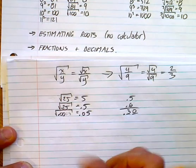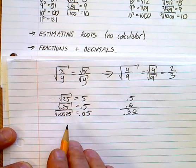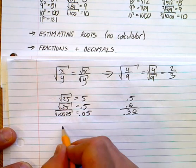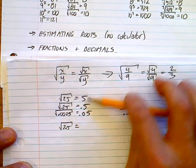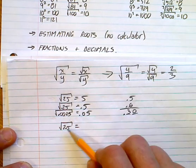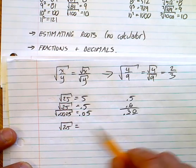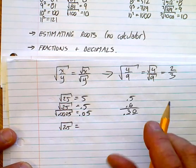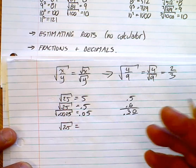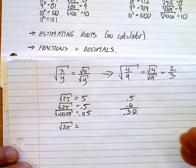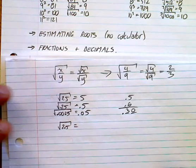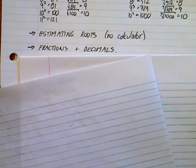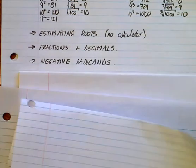The trick here is that 0.5 squared gives 0.25. If you want 0.05, you'd need four decimal places because two decimal places times two decimal places gives four decimal places. You have to remember how to multiply decimals and apply what you know to this new stuff.